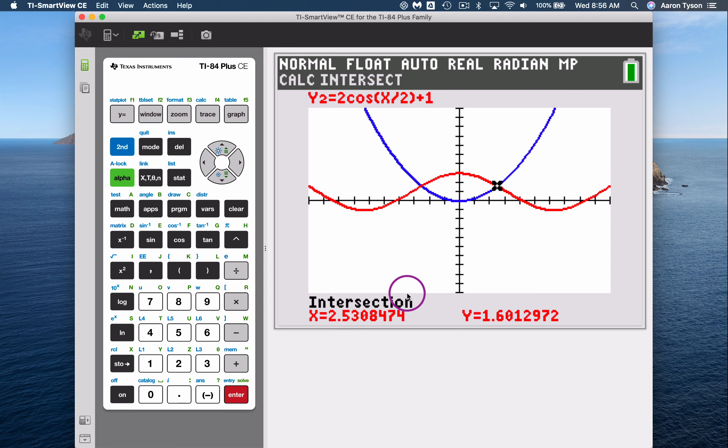So when I hit enter, it tells me that my point of intersection for these two curves is at 2.5308 comma 1.6013. So this would be that point there.